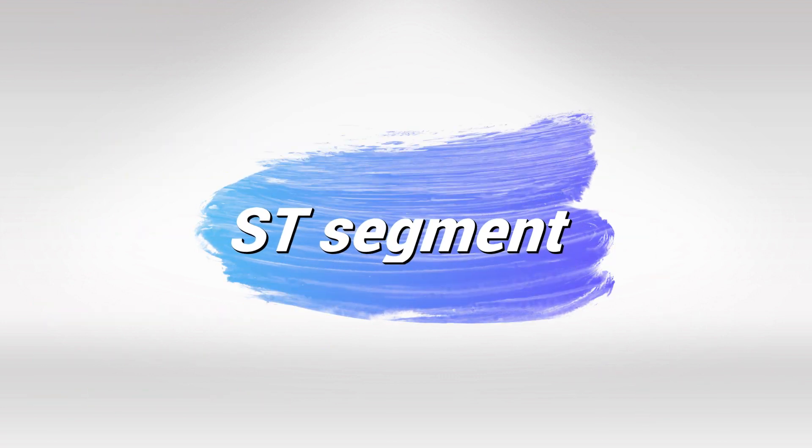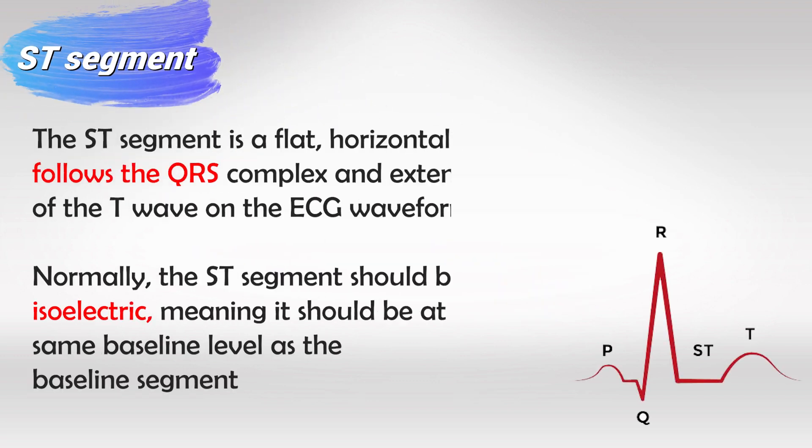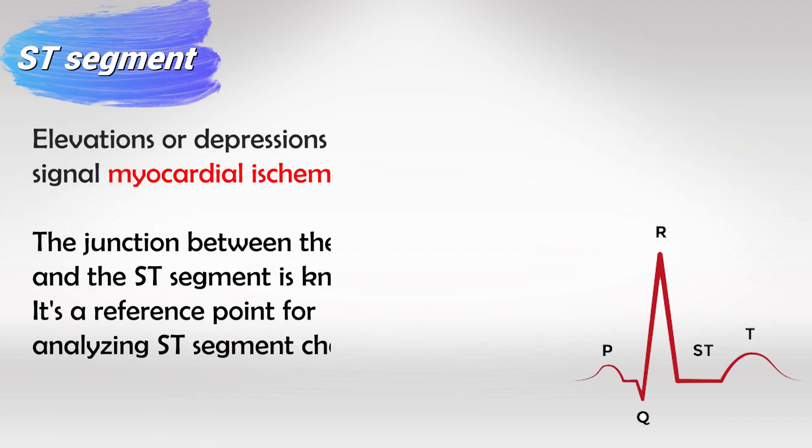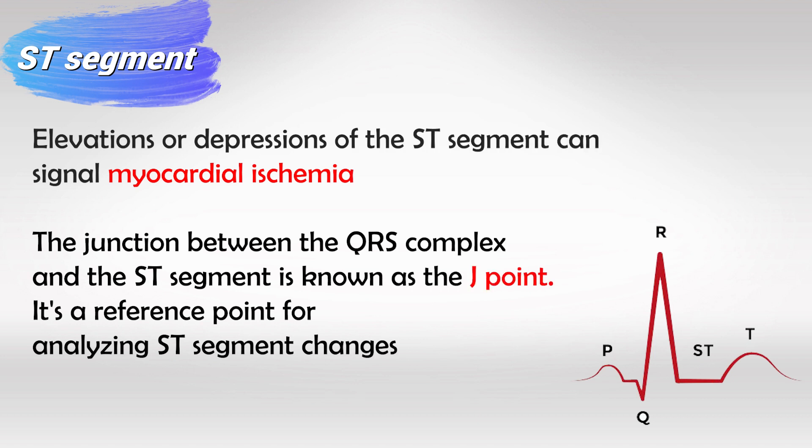And then we have the ST interval which is very important. The ventricular contraction will create the QRS complex and the ventricular relaxation will create the T wave and the period in between the contraction and the relaxation is very important. It is the ST segment and it's a very sharp indicator of myocardial infarction or heart attacks. If this small segment increases or elevates or decreases as depression, it indicates myocardial infarction and must be thoroughly investigated.